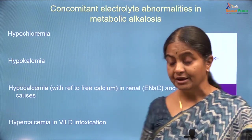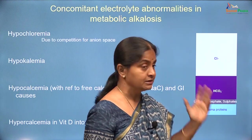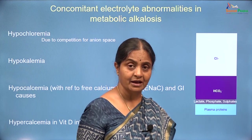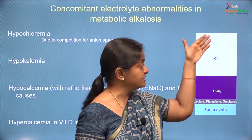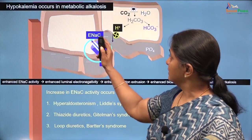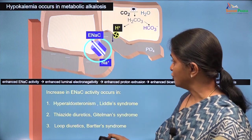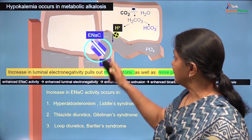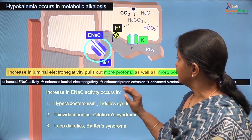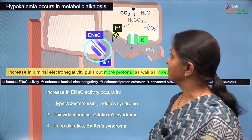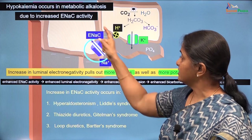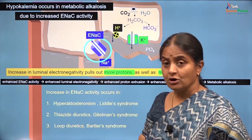There will be hypochloremia because any increase in bicarbonate will result in a consequent reduction of chlorides, or a primary reduction in chlorides will be compensated for by an increase in bicarbonate. Therefore in metabolic alkalosis there is always hypochloremia. Why hypokalemia in metabolic alkalosis? In metabolic alkalosis due to increased ENAC activity, there is an increase in luminal electronegativity that will not only pull out more protons but also more potassium, resulting in loss of potassium in urine and therefore hypokalemia. So hypokalemia in those conditions with increased ENAC activity is due to increased loss of potassium in urine.